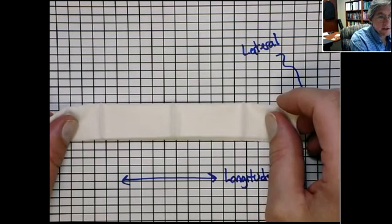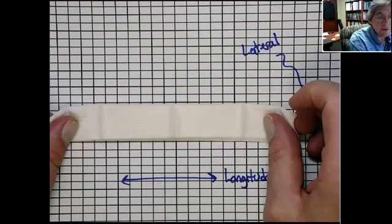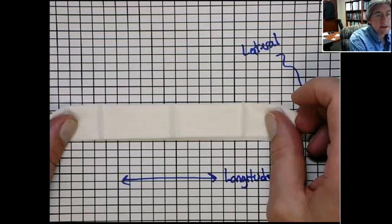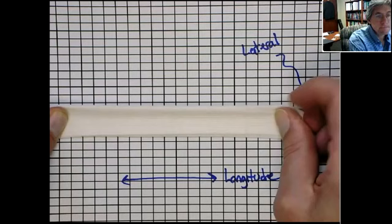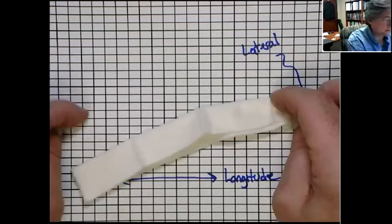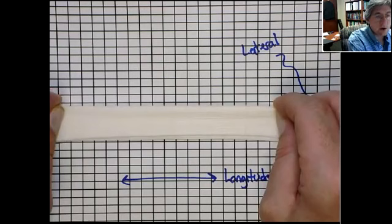Initially, it sort of sits between those two lines in the lateral dimension, and pretty much right on the top and bottom of the black lines of the graph paper. So as I start to pull, what you can see is that dimension in the lateral direction contracts — it becomes smaller.